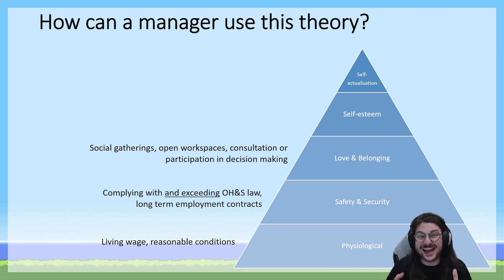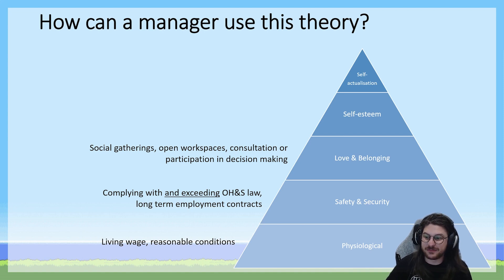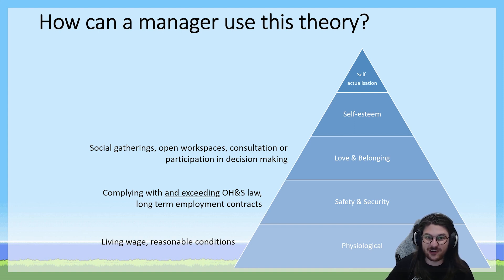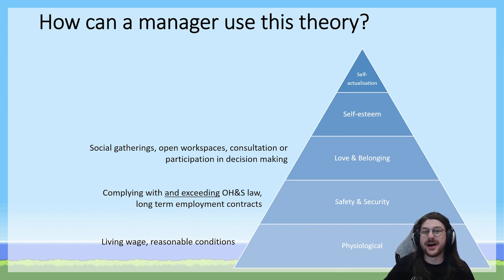These intrinsic motivators aren't things you can necessarily achieve for employees, but you can implement strategies to help. To help employees build relationships, you might implement social gatherings, morning teas, birthday celebrations, or after-work drinks to facilitate interaction and conversation. Open plan workspaces are known to encourage conversation and collaboration. Involving employees in consultation or teamwork and participation in decision-making means they're working together, which may help them build meaningful relationships.